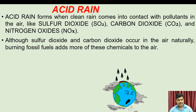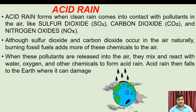Although sulfur dioxide and carbon dioxide occur in air naturally, burning fossil fuels adds more of these chemicals to the air. When these pollutants are released into the air, they mix and react with water, oxygen, and other chemicals to form acid rain.